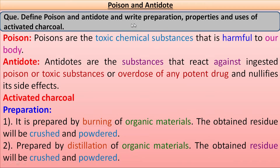In your examination, the question will be asked in this manner: Define poison and antidote, and write about preparation, properties, and uses of activated charcoal. In that question, you will give the definition of poison as well as antidote, and you will write the preparation, properties, and use of activated charcoal.